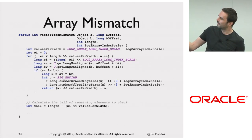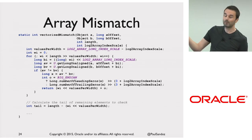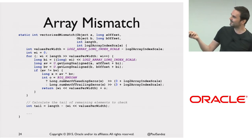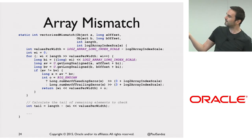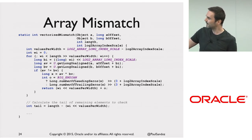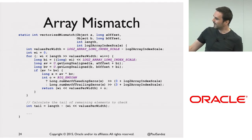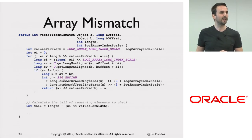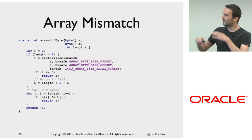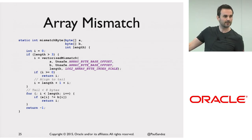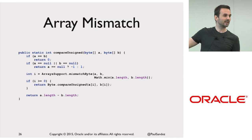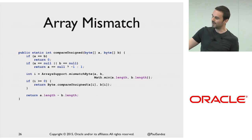Here's an example of what it looks like. There's a vectorized mismatch method that takes an object — which is actually an array (we don't have a super type for array yet) — an offset into it, another array B with an offset, a length, and the log2 of the array index scale. We loop over this as longs, check if the two values are not equal, do some bit twiddling and pop out an index. If we don't find a mismatch, we return 1 plus negation of how many elements in the array. Pretty simple stuff. We can add a Java method on top using this after a certain threshold.